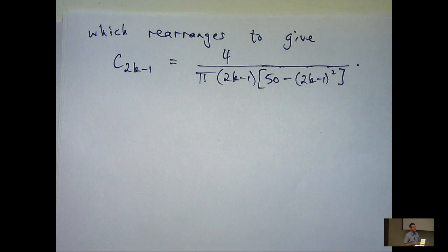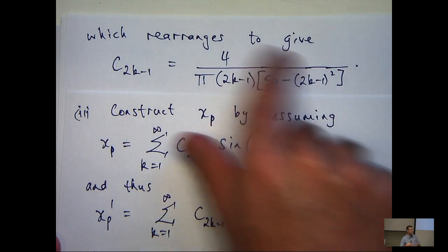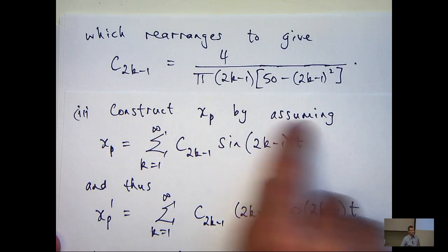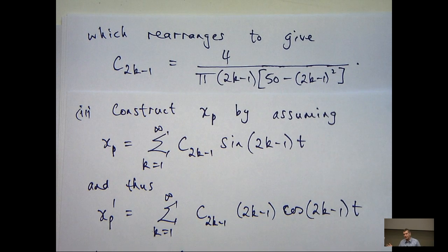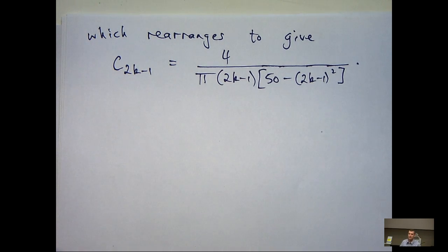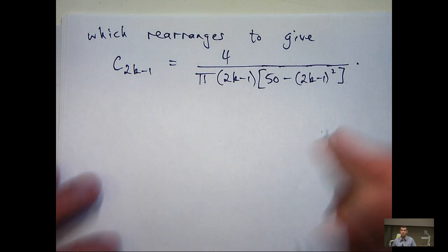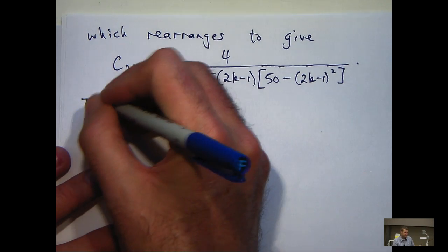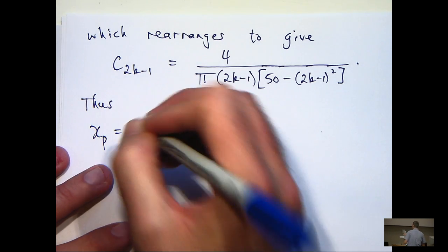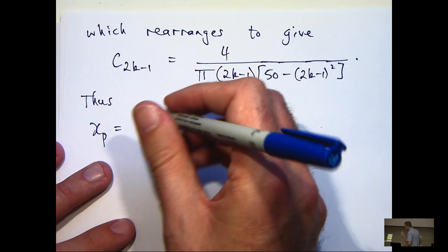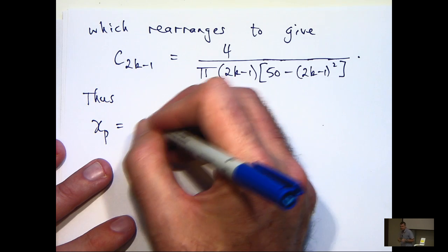Once I've found this coefficient, I can put it back into the assumed form for x sub p and I've got my particular solution. It's quite messy, but it's what we're looking for.